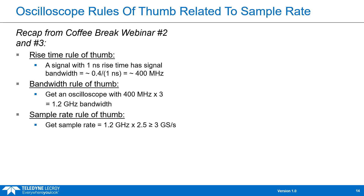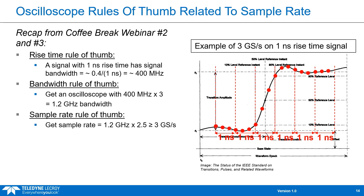Using the sample rate rule of thumb we learned in this webinar, we get a sample rate that is two-and-a-half times the oscilloscope bandwidth — meaning a sample rate of 3 Giga-samples per second. Looking at how 3 GS/s looks on this one nanosecond rise time signal, you can see that you have enough samples to capture the pre-shoot, the rise time, and the overshoot. We're able to accurately reconstruct the signal using the Nyquist sample rate.